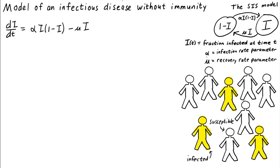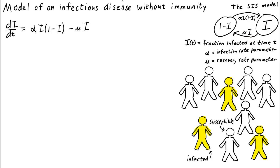The model has two parameters, alpha and mu, so that the rate of infection is proportional to i, the number of infected individuals, and proportional to 1 minus i, the number of susceptible individuals, with proportionality constant alpha. Mu is the recovery rate parameter, so that the rate of recovery is equal to mu times the fraction of infected individuals, i.